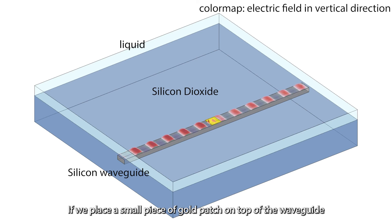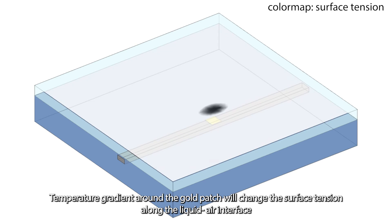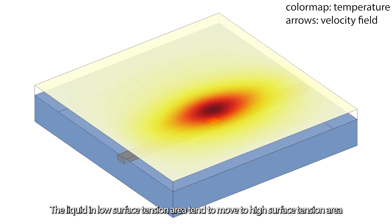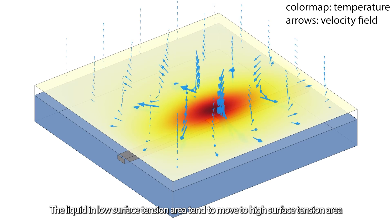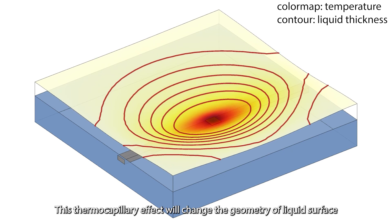If we place a small piece of gold patch on top of the waveguide, lossy gold will absorb the light and generate heat. Temperature gradient around the gold patch will change the surface tension along the liquid-air interface. The liquid in low surface tension area tends to move to high surface tension area. This thermocapillary effect will change the geometry of the liquid surface.